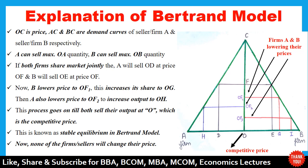Firm A can sell a maximum quantity OA, whereas firm B can sell a maximum quantity OB. In this case, total output is OA plus OB as shown in the diagram. If both the sellers share the market jointly, then seller A will sell OD and seller B will sell OE at the price OF.